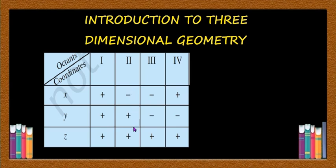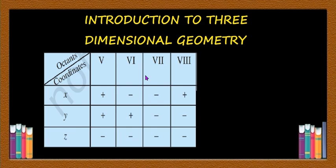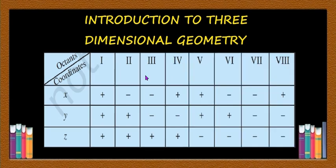In the second octant, x is negative and y and z are positive. In the third octant, x and y are negative and z is positive. In the fourth octant, x is positive, y is negative, and z is positive. You can memorize this easily because you know the signs of x and y in two dimensions in various quadrants. With z positive you get the signs in the first, second, third, and fourth octants. For the next four octants the sign of z is negative, giving you the fifth through eighth octants. It is easy to memorize this table.